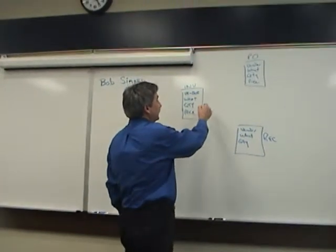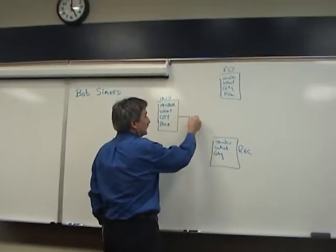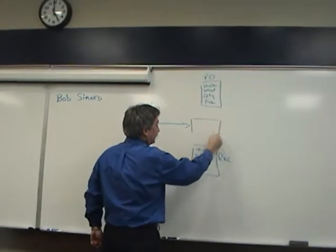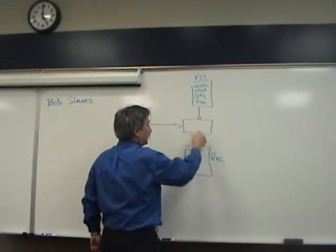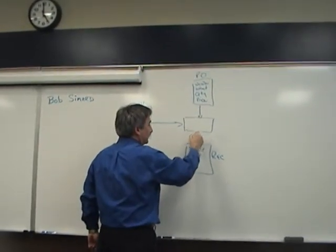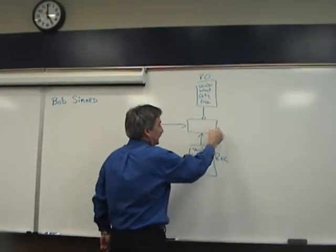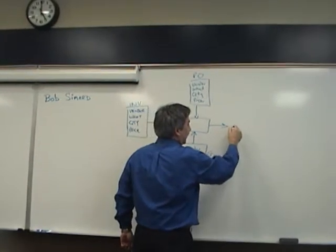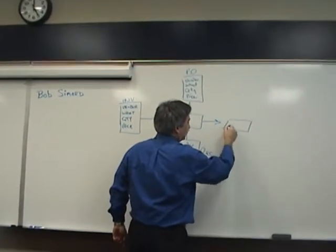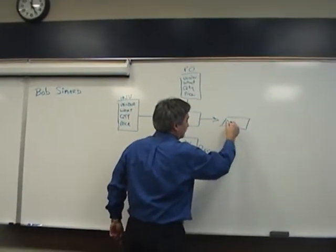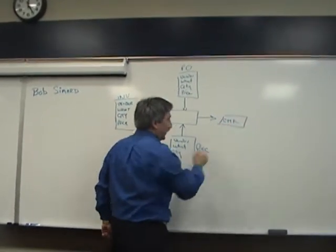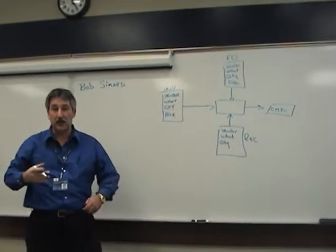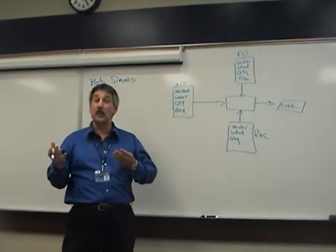By taking this invoice, taking the purchase order, and taking the receiving document, we can create a check to pay our vendor. And this is what they call a three-way match.